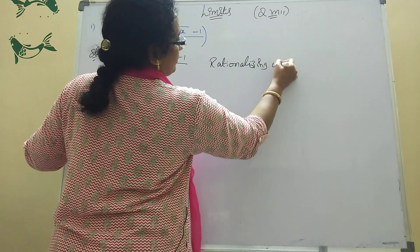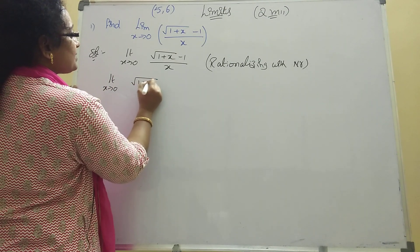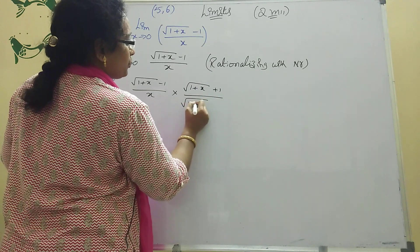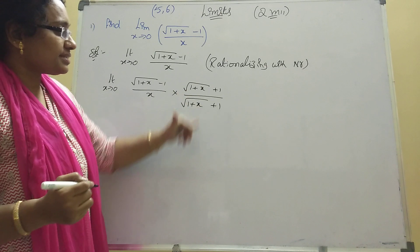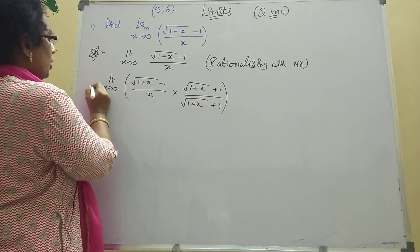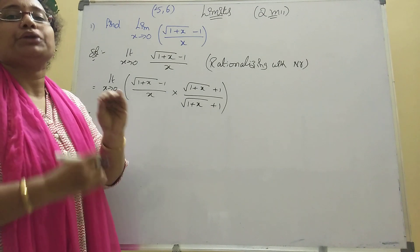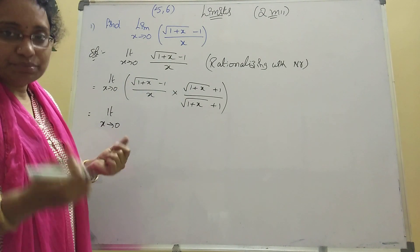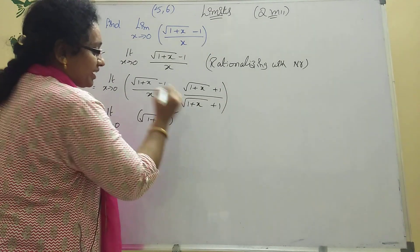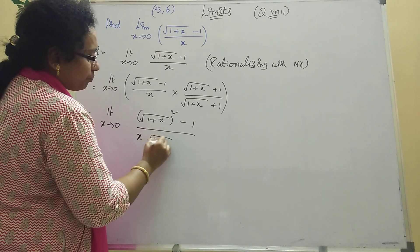Rationalizing with the numerator: limit x tends to 0, root of (1 plus x) minus 1 by x, multiplied by root of (1 plus x) plus 1 divided by root of (1 plus x) plus 1. Write opposite sign in the conjugate. Now apply a plus b into a minus b equals a squared minus b squared. Here a is root(1 plus x), so a squared is 1 plus x, and b squared is 1.